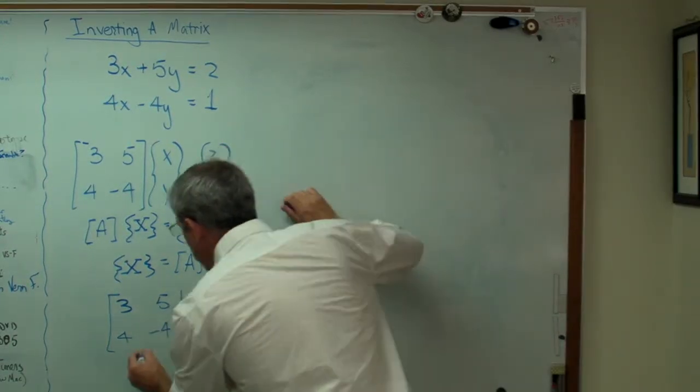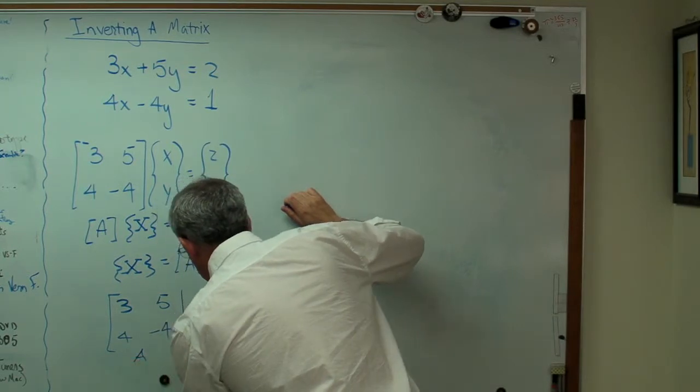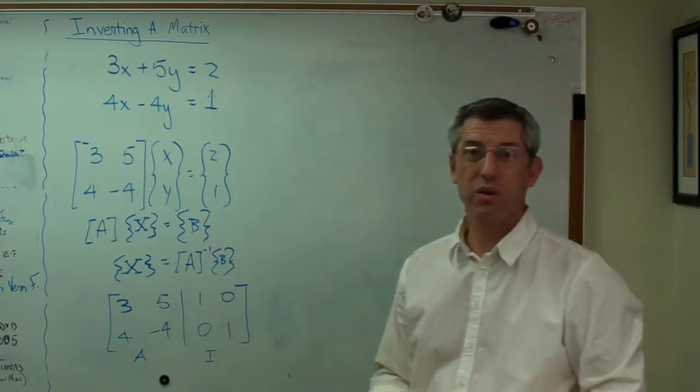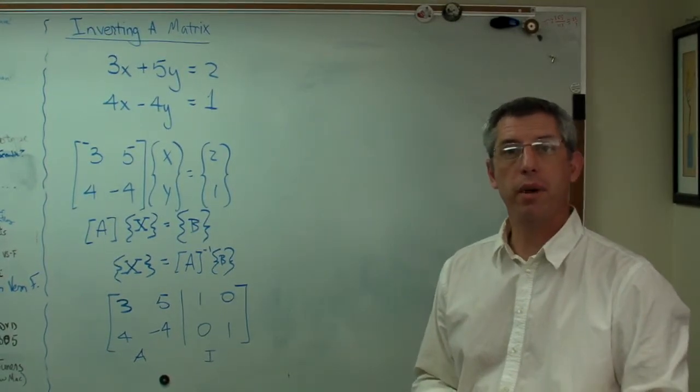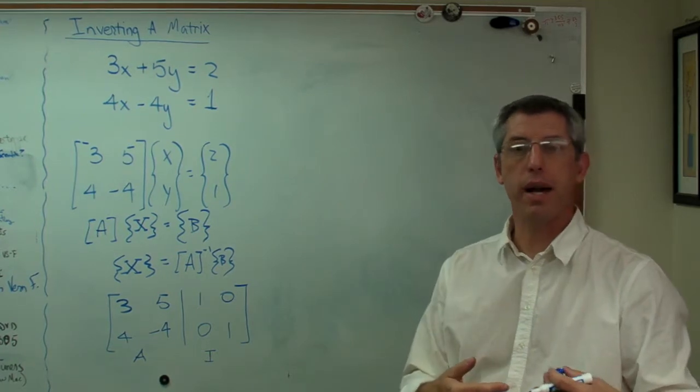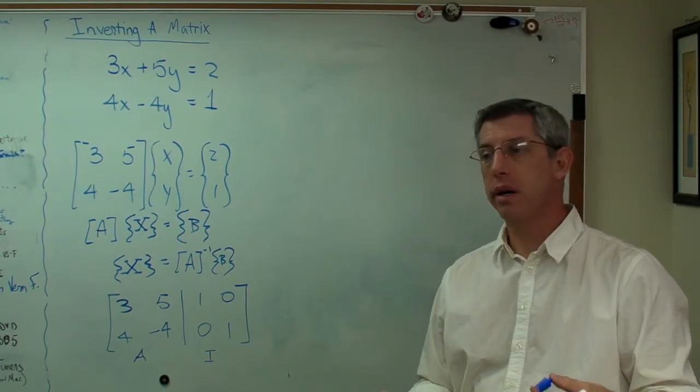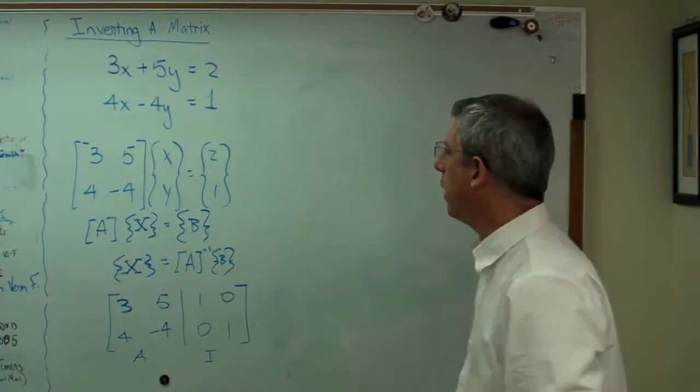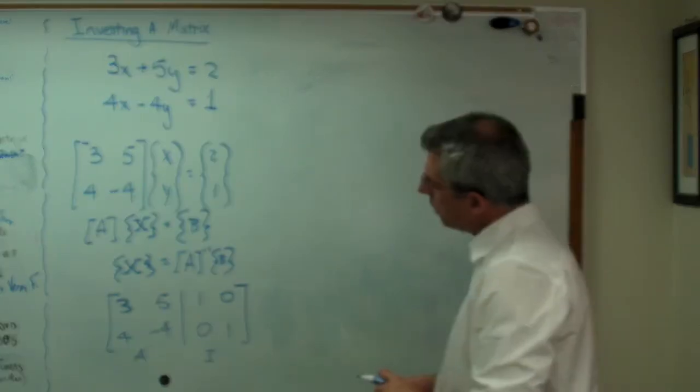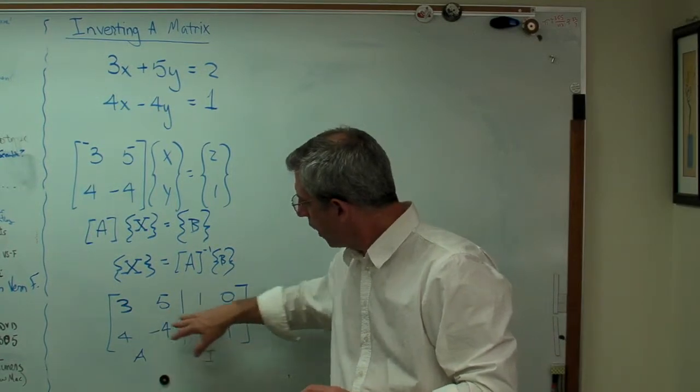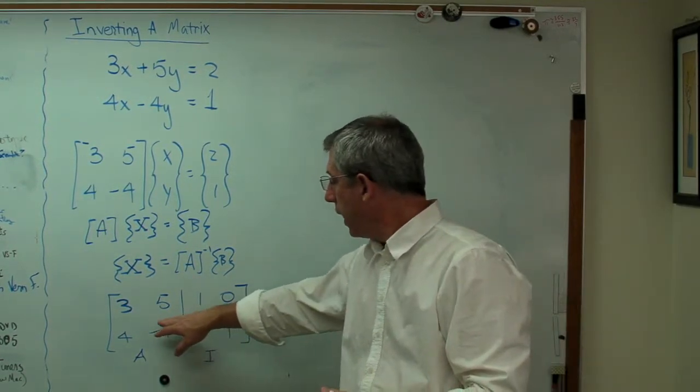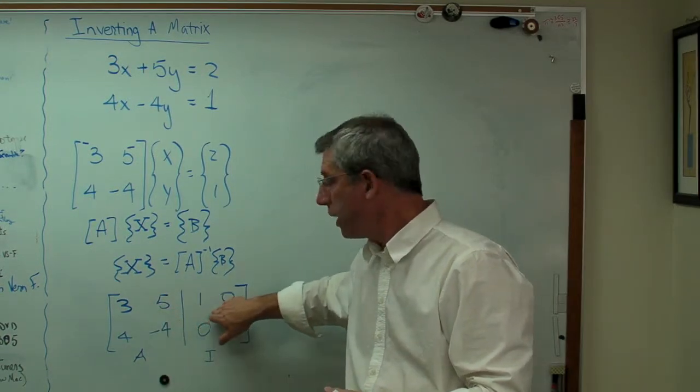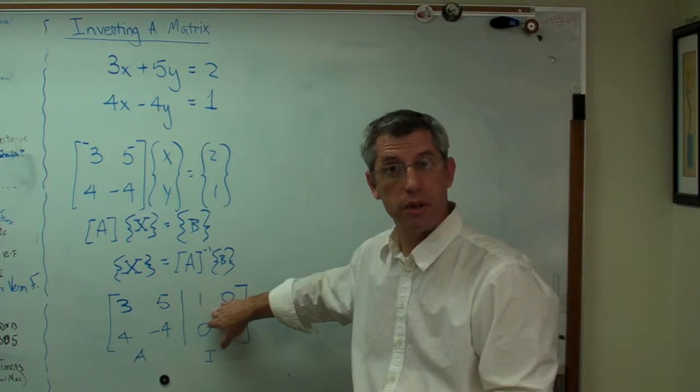I'm going to append another matrix to the right side of it. Now this is called an augmented matrix. This is A, just like before. And this one over here is something called the identity matrix. The identity matrix is the matrix equivalent of 1. If I multiply a matrix by the identity matrix, I get the same thing back. It's like if I multiply 4 by 1, I get 4. So what I'm going to do now is perform row operations on this augmented matrix, and I'm going to keep doing it until this side is the identity matrix. This side is now going to be the inverse of A.